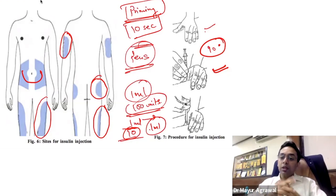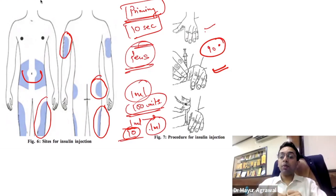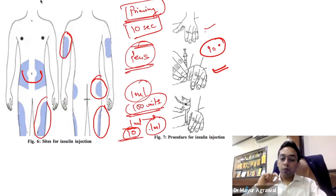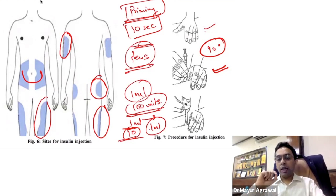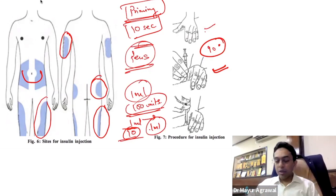If a patient uses the same needle for a month: first, the blunted tip will not deliver properly; second, chances of infection increase; third, lipohypertrophy increases due to blunt injury. Also, once the needle is removed after injection, subcutaneous tissue is attached to it, so repeated use alters delivery. These are important practical aspects to consider when prescribing insulin and explaining to patients.